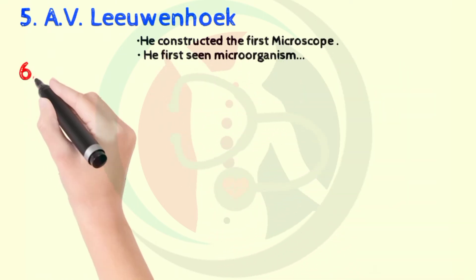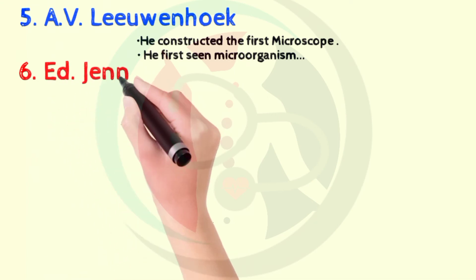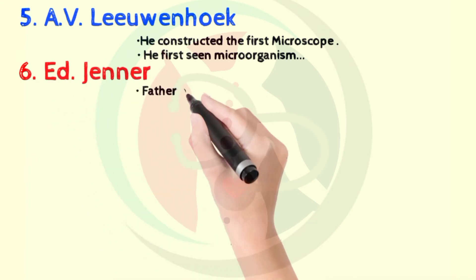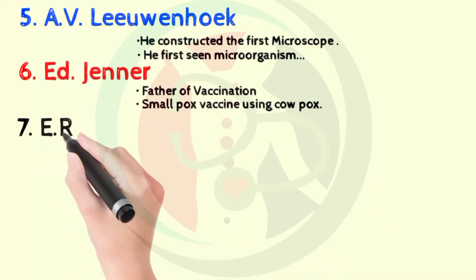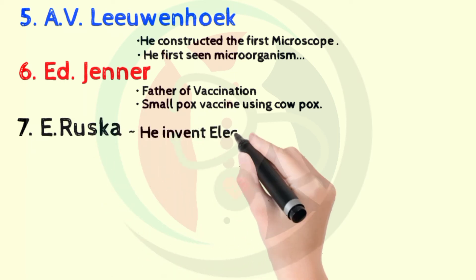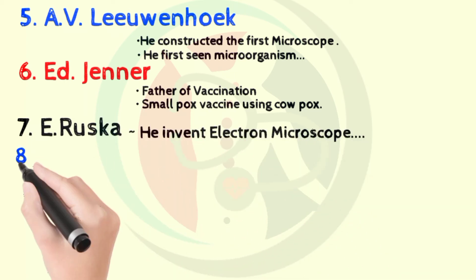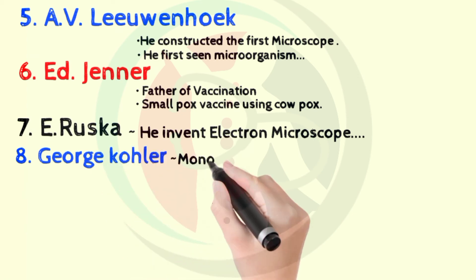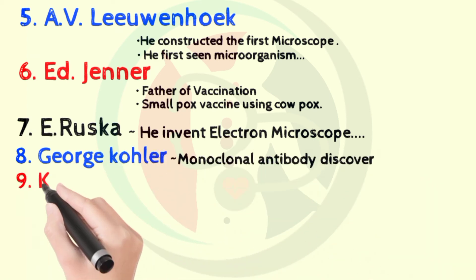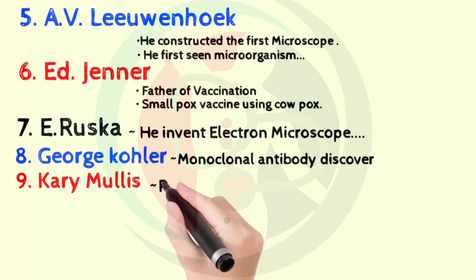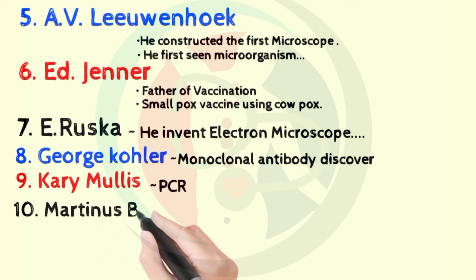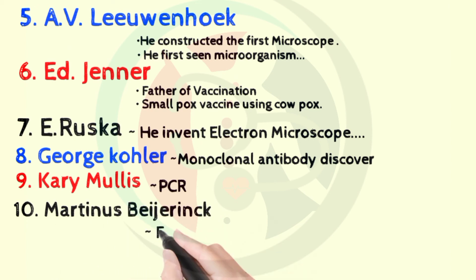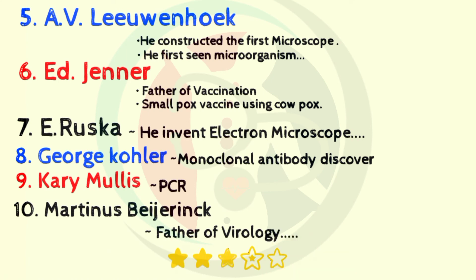The next scientist is Edward Jenner, also known as the father of vaccination. He used the smallpox vaccine using cowpox. Next is Ernest Ruska, who invented the electron microscope. And George Kohler, who discovered the monoclonal antibody. The discovery of Kary Mullis is the polymerase chain reaction, PCR. Let us also know about Martinus Beijerinck. He is known as the father of virology. He showed that viruses are small and infectious, and they reproduce and are different from other organisms.